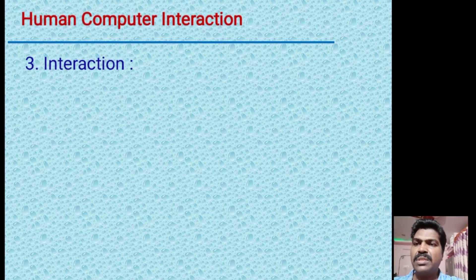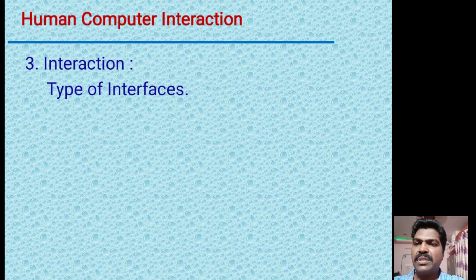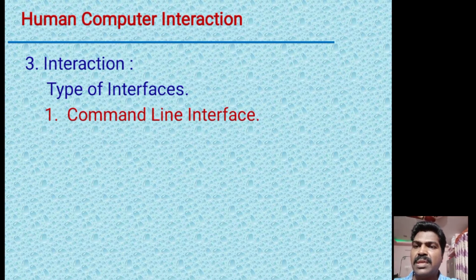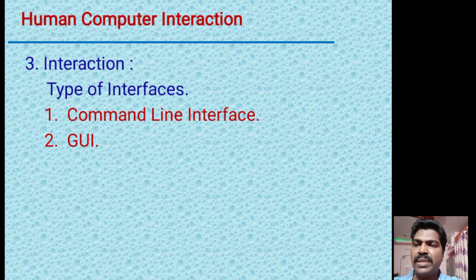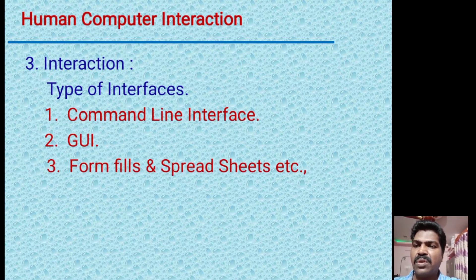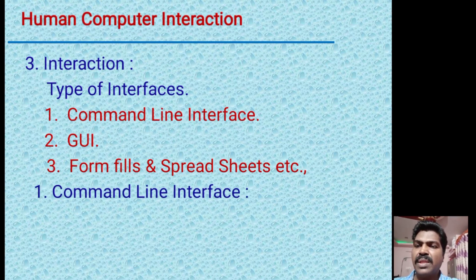Next is interaction. There are different types of interfaces through which humans can interact with a system. If a human wants to interact with the system, we have different types of interfaces such as command-line interface, GUI (graphical user interface), form fields, and spreadsheets.